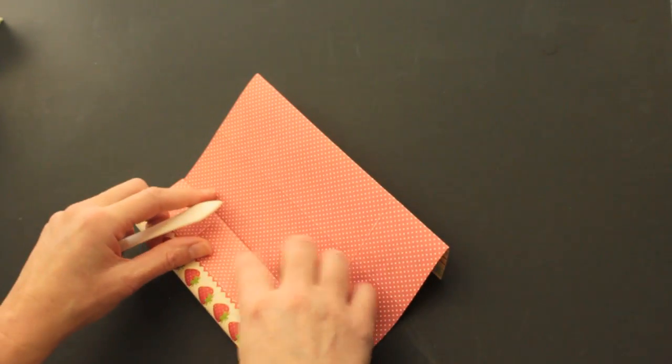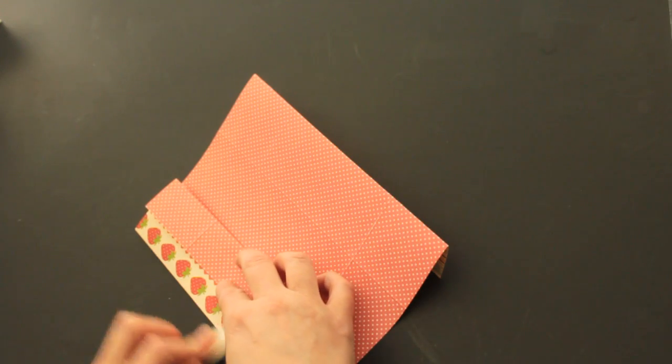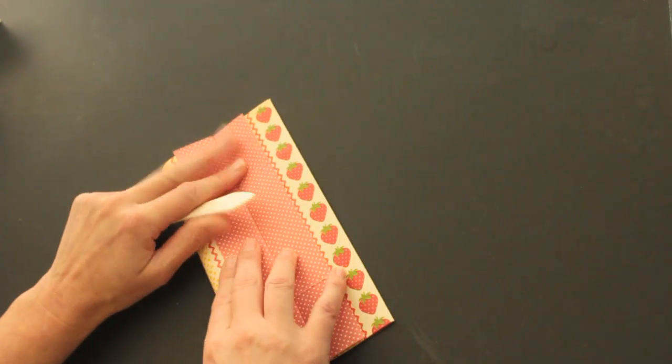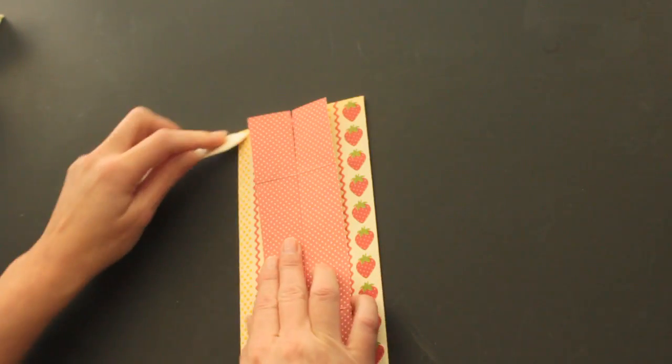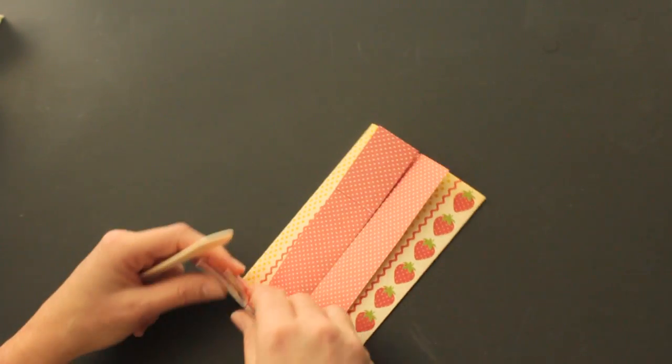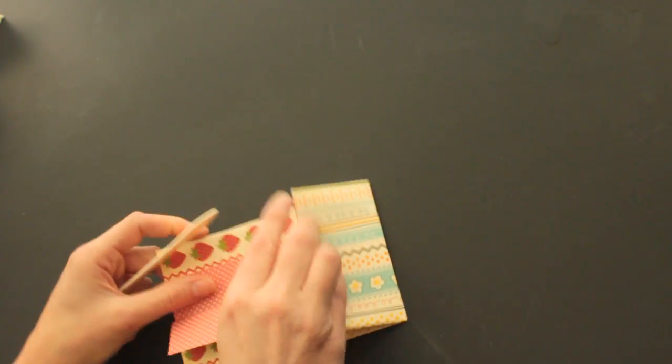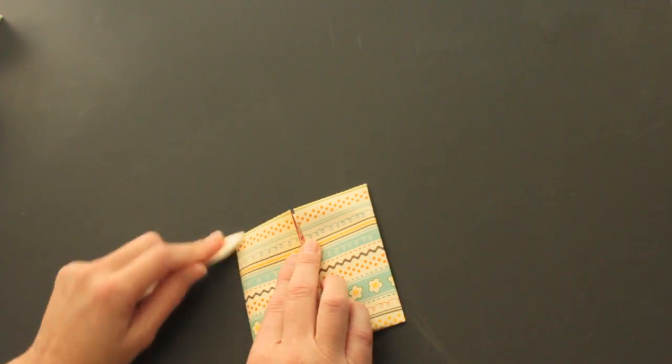Then flip your paper and fold the next score line down. Next, you fold the sides in so you'll have a square.